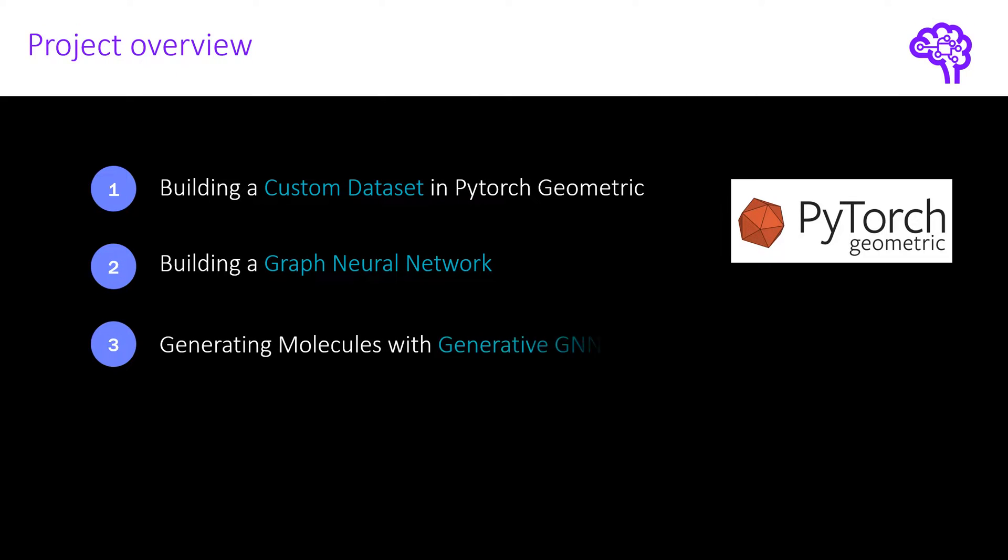In video three I plan to build upon that and want to implement a generative graph neural network that is able to generate potentially useful HIV inhibitors. So that would be a classical drug discovery task.